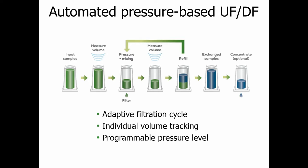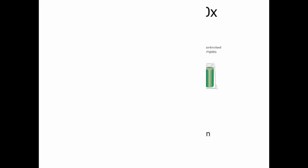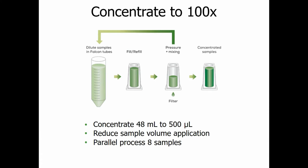The adaptive part is that Unagi remeasures volume at the end of each buffer exchange cycle and automatically changes the amount of time pressure is applied to ensure none of your samples dry out. It goes through several rounds of buffer exchange, and then you have the option to concentrate. For those working with AAVs or LNPs making 20–50 mls at a time, the reduced sample volume application lets you concentrate from a starting volume of 48 mils down to half a mil by using conical tubes on the deck.